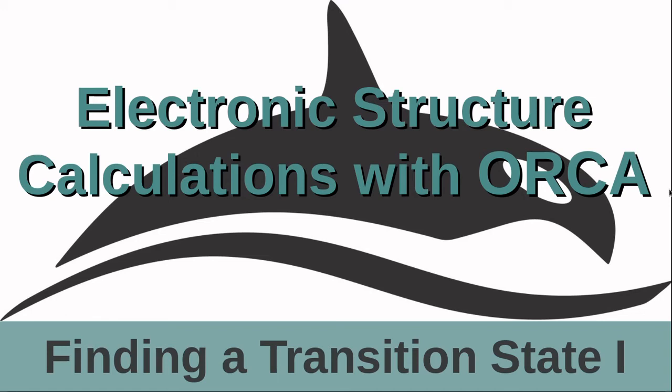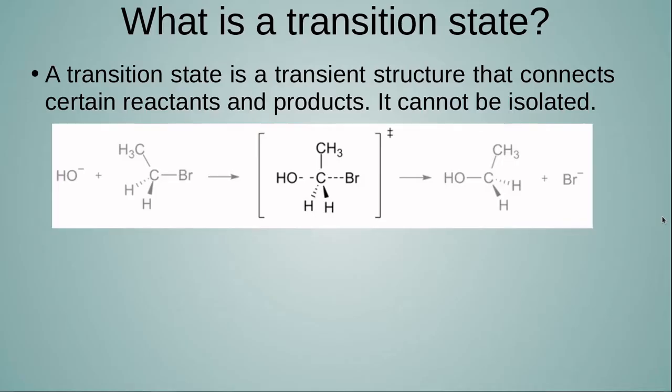Hello everybody, welcome back to this electronic structure series. I'm going to talk about finding a transition state. This will be a first introduction to the topic. A transition state is a structure or molecular configuration that connects certain reactants and products. It cannot be isolated, although apparently there are several very fast spectroscopic techniques that allow observation of structures that are close to the transition state.